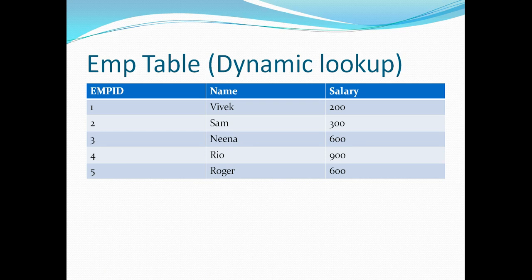Someone might ask why we don't use dynamic lookup for everything. It's more intensive because after every row it has to rebuild the cache. So only when it's really required — when you foresee a situation like this — should you use dynamic lookup. Otherwise static lookup is sufficient.